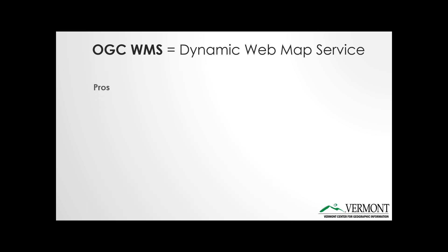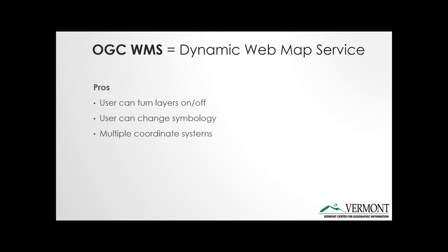There are certain pros to this dynamic web map service. It allows users to turn layers on and off, and it also allows users to change the symbology. Lastly, it supports multiple coordinate systems, meaning that the user or client application can request the map in the coordinate system that they desire.